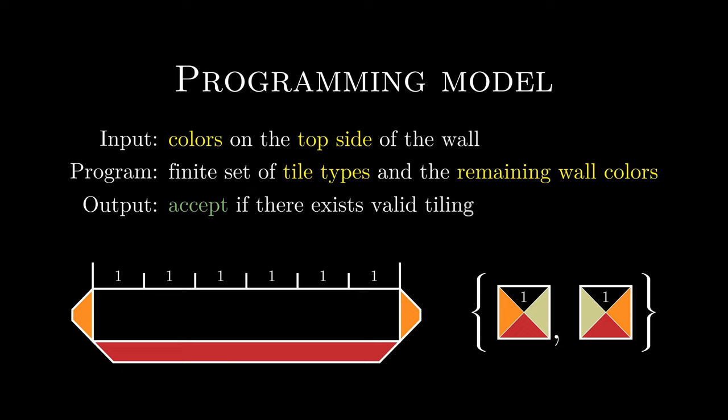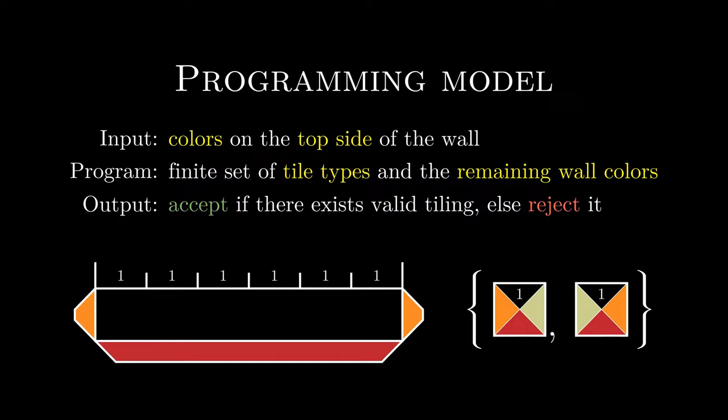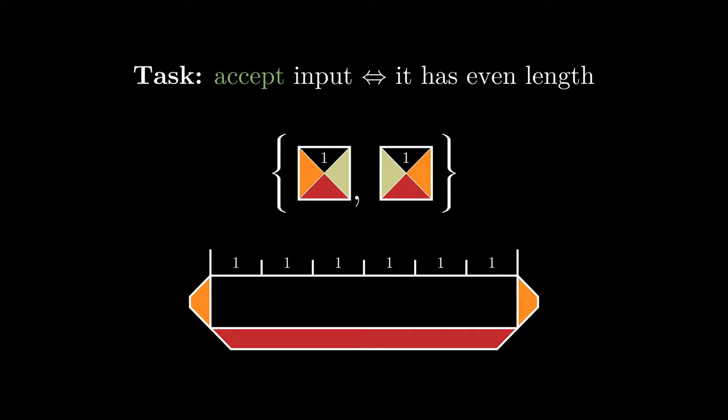The program will accept the input if there exists a valid tiling of any non-zero height and reject it if there is none. Looking at this example, the program will accept the input if and only if it has even length.